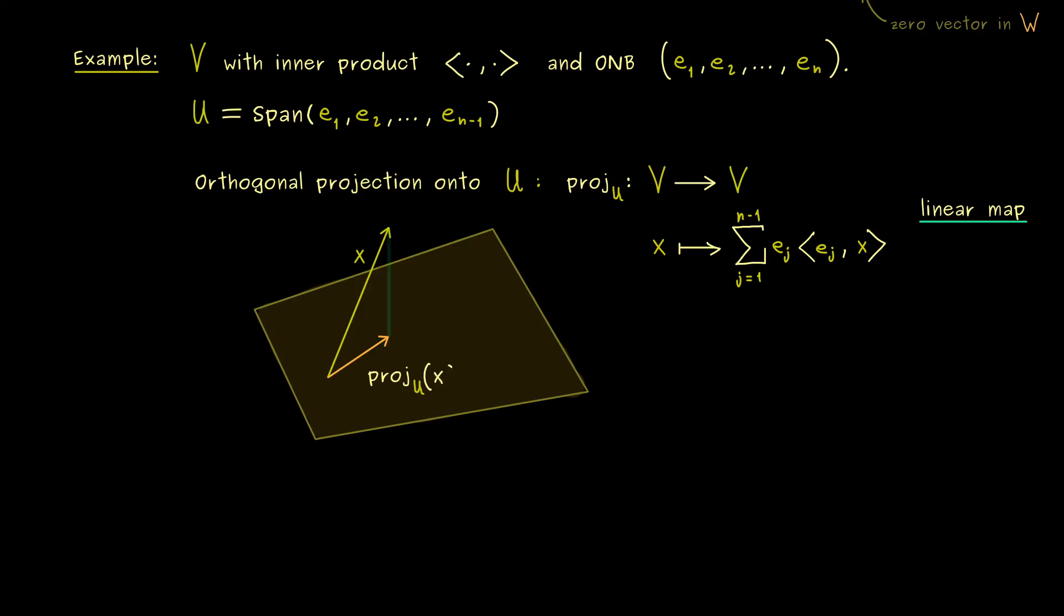And now please recall the picture we have in mind here. If we have a vector x there, then here we find the orthogonal projection in U. Moreover, in the same sense, we can also define the normal component here. In fact, this would be the orthogonal projection onto the orthogonal complement of U. So this means we can write it as a sum again, but now the sum only has one term, namely it's just the last vector in our ONB, en, and don't forget the scalar inner product ⟨en, x⟩. And by the same reasoning, this is also a linear map.